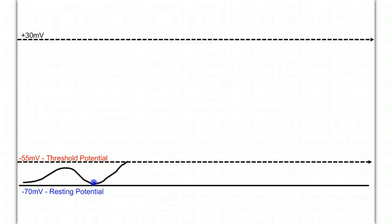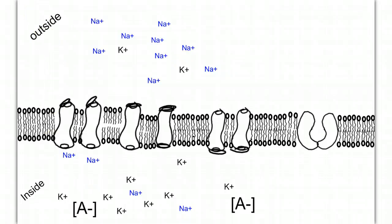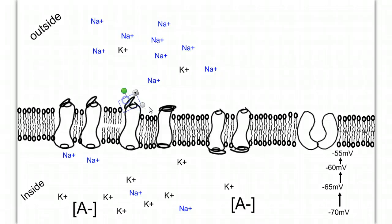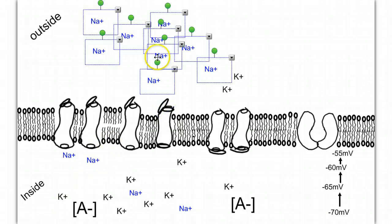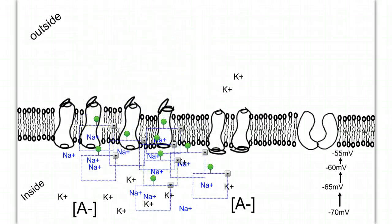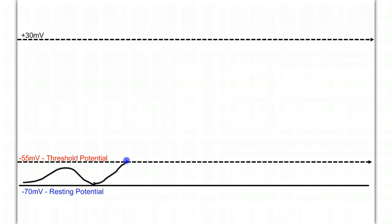As more sodium moves across the membrane, the voltage difference across the membrane is going to change, as we move from negative 70, to negative 65, to negative 60, to negative 55. When we hit this value — the threshold potential — all of the voltage sensitive sodium gates open at one time, and sodium comes flooding into the neuron. This influx of sodium causes a very fast, very steep depolarization phase of the action potential, as the voltage changes from negative 55 all the way up to positive 30 millivolts.